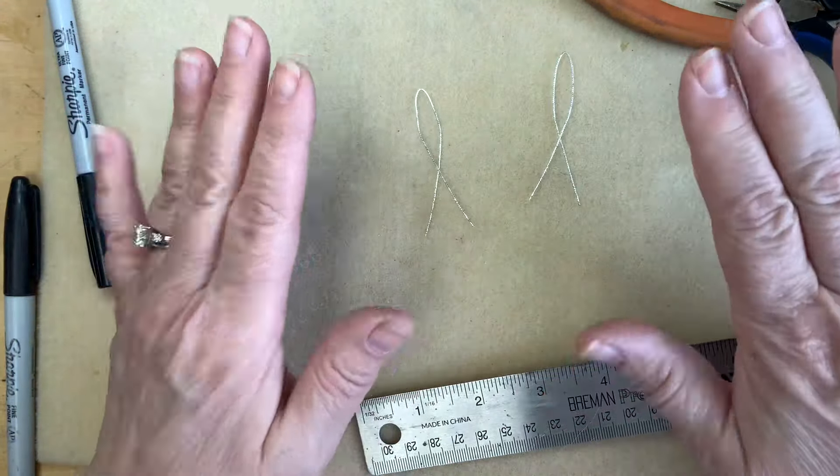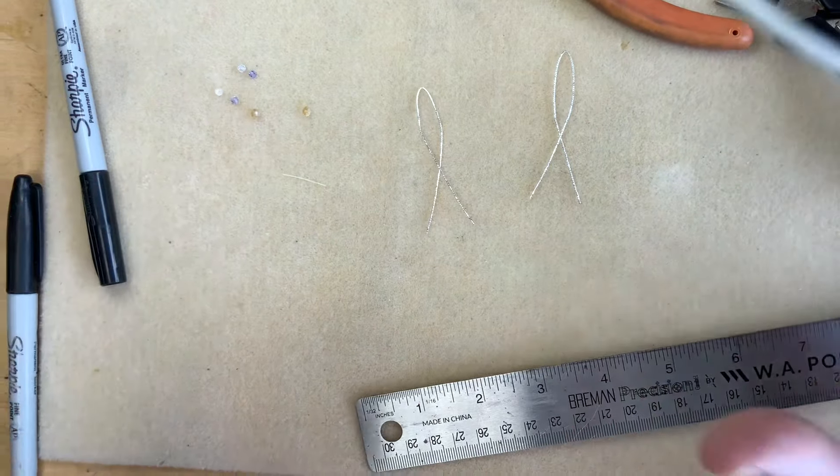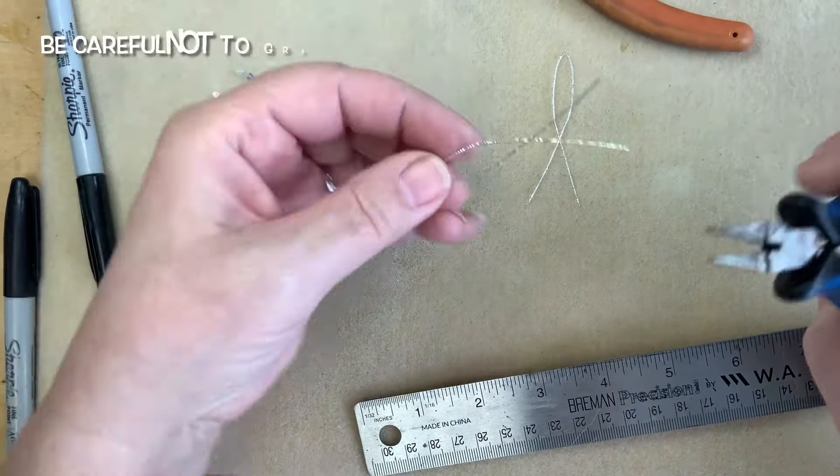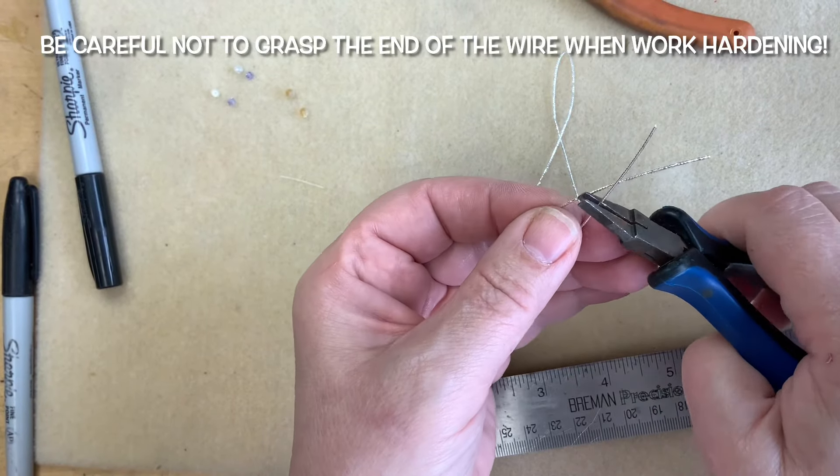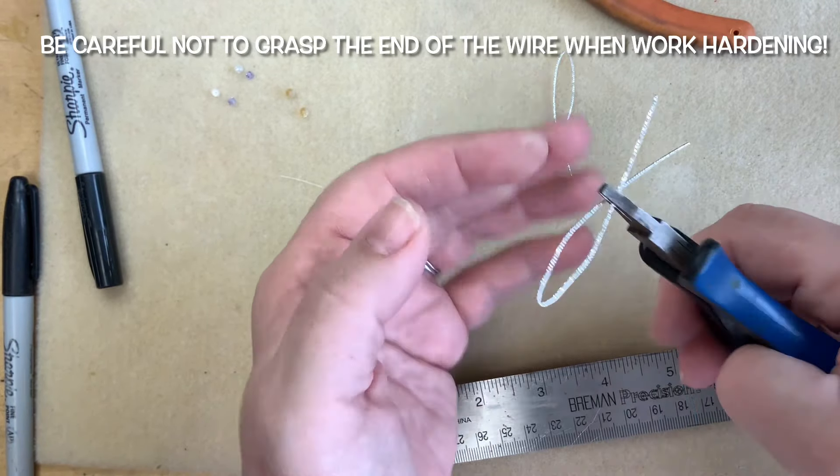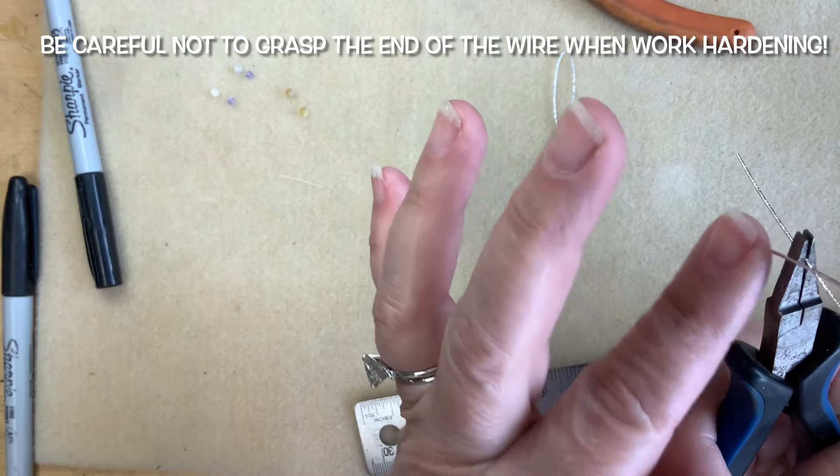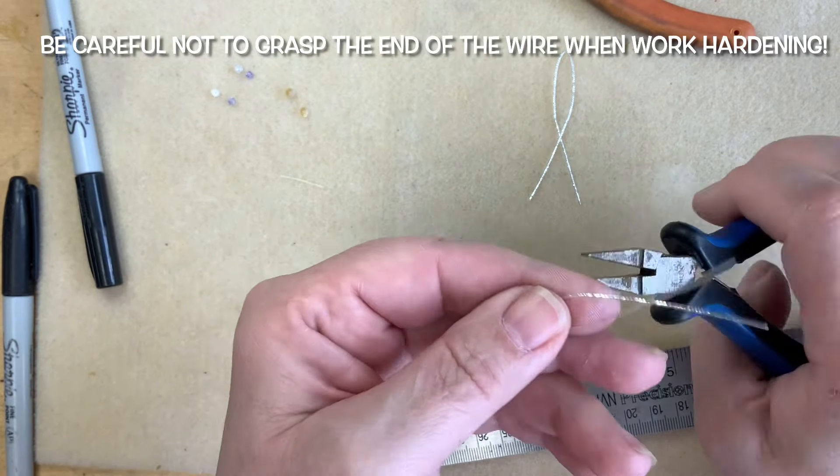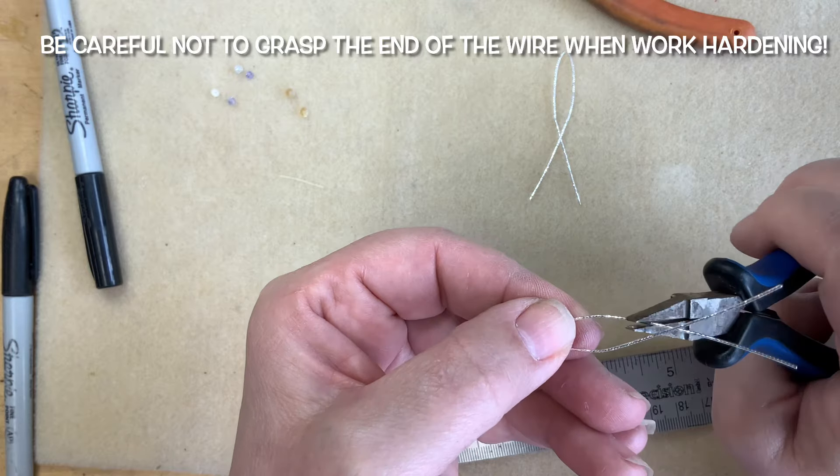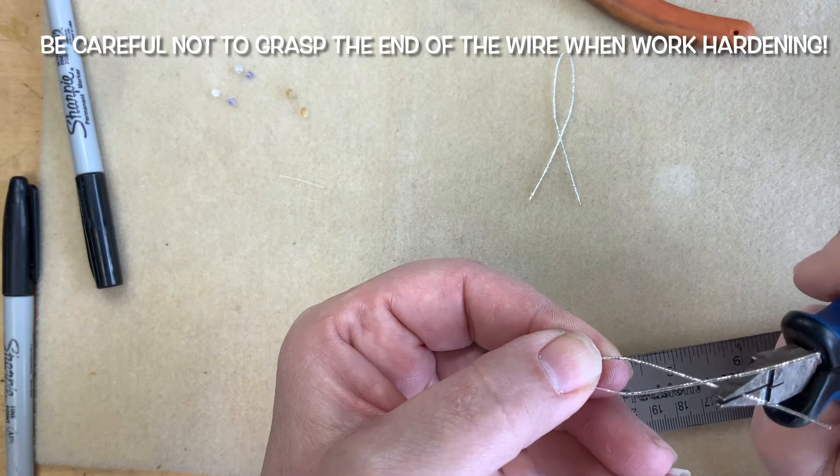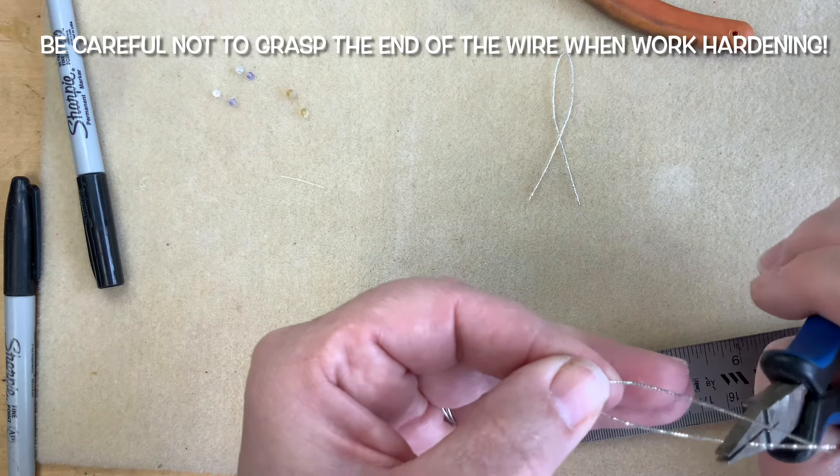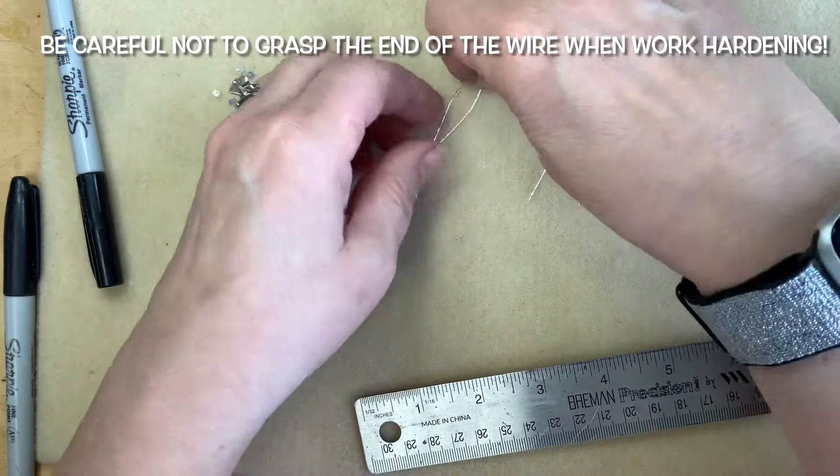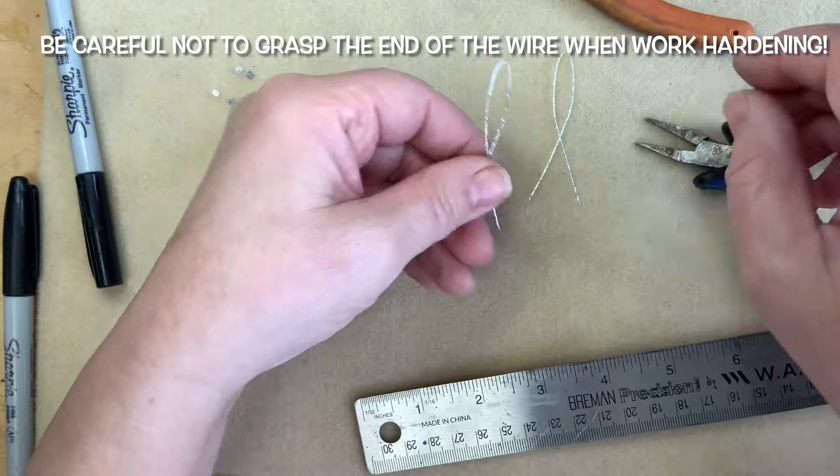Now to keep them this way, I want to work harden them just a little bit. We're not going to squeeze them to flatten them like we did before. Just kind of don't run over the top of the cross. Do each wire separate and just give them a little squeeze all the way down the length of the wires to work harden that shape.